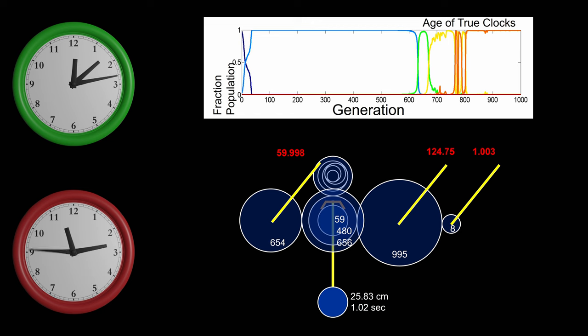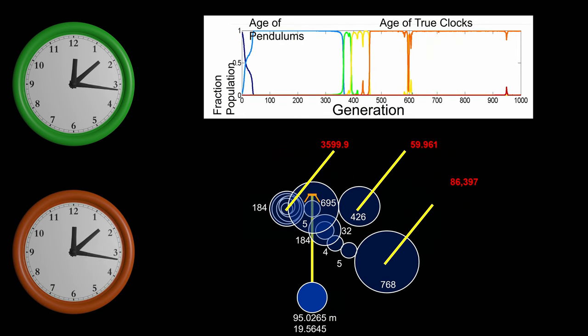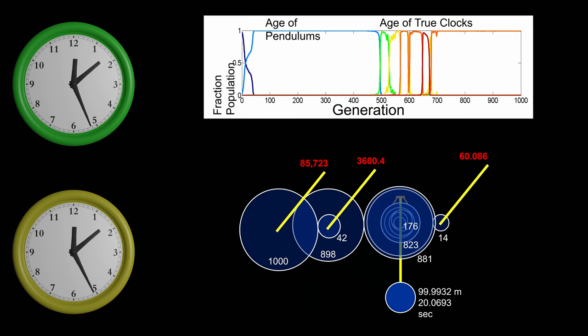He ran the simulation twice more. On the next run, he got three-handed clocks with a minute hand, an hour hand, and a day hand. They were accurate to one minute every 25 days. On the third run, he very briefly got four-handed clocks, but then three-handed clocks dominated again. This was not a regression. These were new three-handed clocks that just told time better, with minute, hour, and day hands.